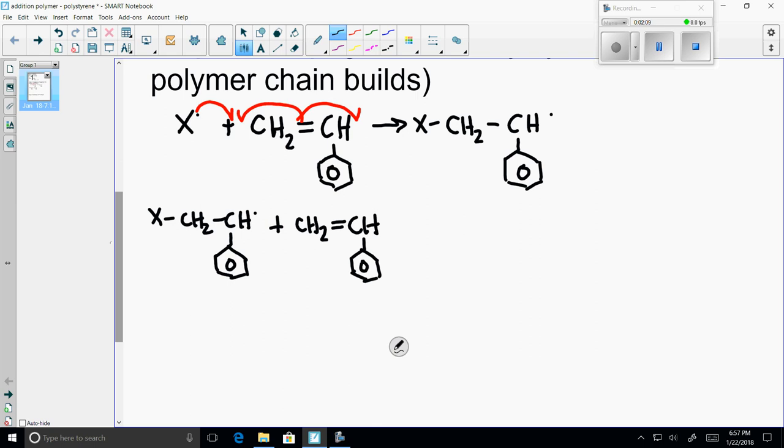Our product out of step one, which is also a free radical, attacks a second piece of monomer. The free radical electron moves to the space between the free radical and the first carbon of the double bond. The upper bond breaks, one electron to the left, one to the right.